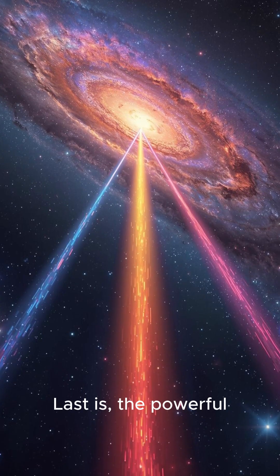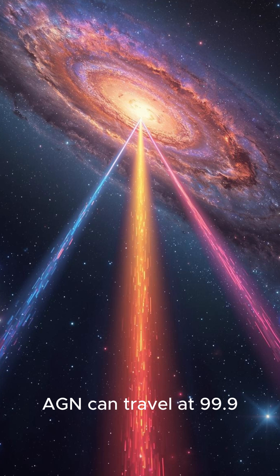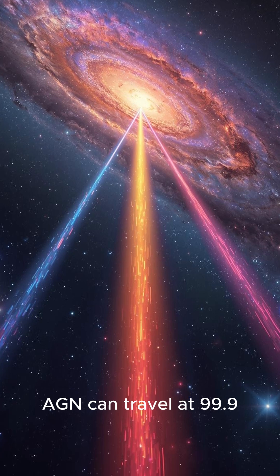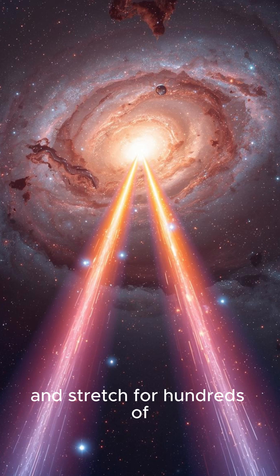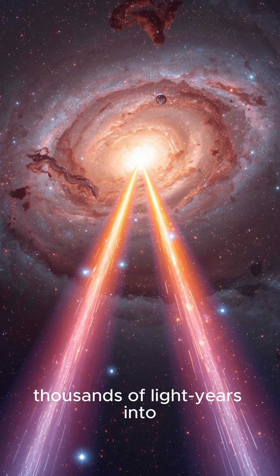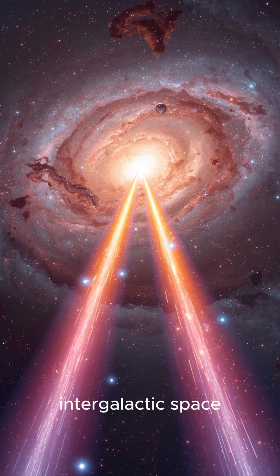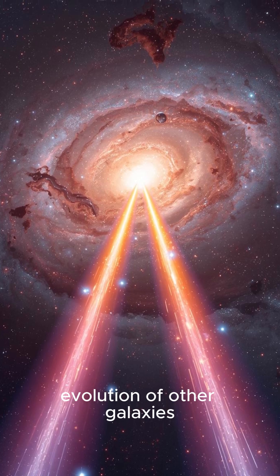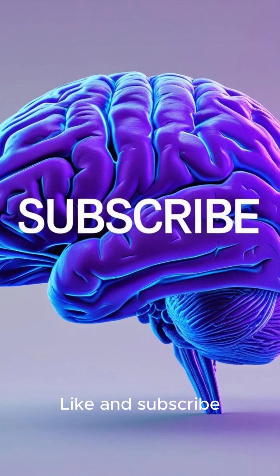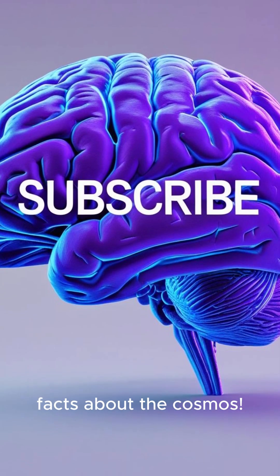Last is, the powerful particle jets shot out by some AGN can travel at 99.9% the speed of light, and stretch for hundreds of thousands of light years into intergalactic space, shaping the evolution of other galaxies. Like and subscribe for more mind-bending facts about the cosmos.